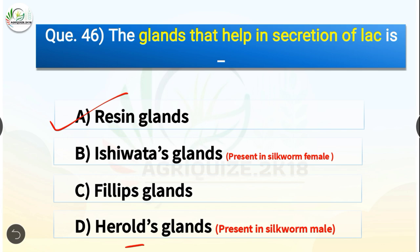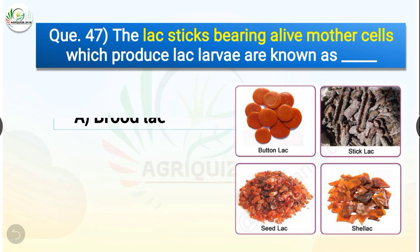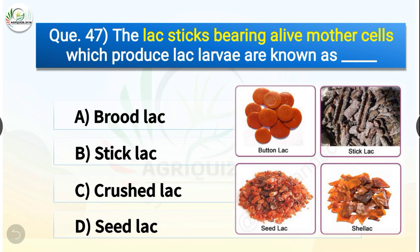Question number forty-seven: The lac sticks bearing alive mother cells which produce lac larvae are known as dash. The options are brood lac, stick lac, crushed lac, or seed lac. The correct answer is option A — brood lac. The lac sticks bearing alive mother cells which produce lac larvae are known as brood lac.